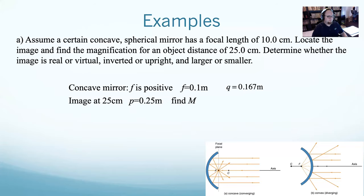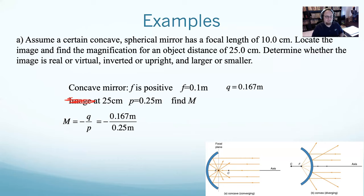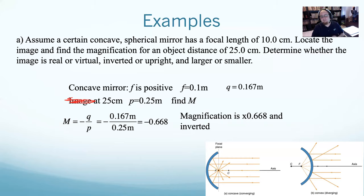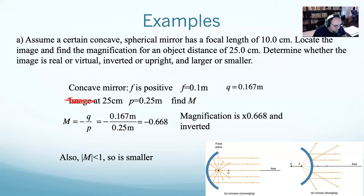Now we can find the magnification. Magnification is negative q over p. We got q = 0.167 meters, and p = 0.25 meters. That gives a magnification of negative 0.668. The magnitude is 0.668, which is less than one, so the image is smaller. Because it's negative, we know it must be inverted.